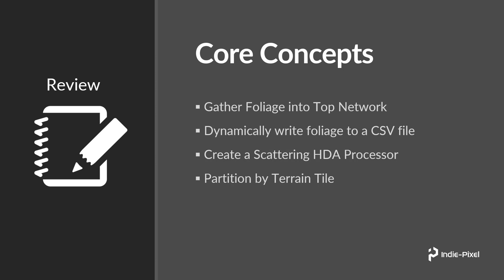From there we're going to partition all that data into little buckets and work on each terrain tile individually, scattering foliage individually on each of those terrain tiles. Finally, we'll instantiate the foliage onto our terrain. By the end of this section we'll have a complete terrain with foliage, rocks, and bushes scattered all over — a really fast way to get a ton of foliage onto your terrain. Let's jump back into Houdini and get things going.